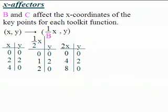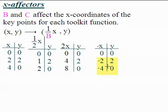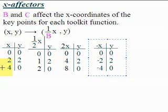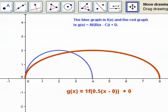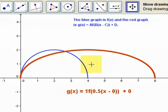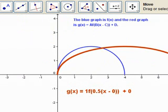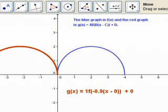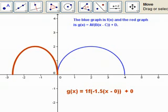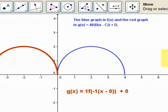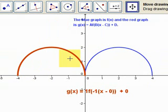When the B value is negative, it flips the graph over the y-axis — similar to how a negative A flips over the x-axis. With B at negative 1, all X values are multiplied by negative 1. So the ordered pair (2, 2) becomes (-2, 2), and the graph is flipped over the y-axis.